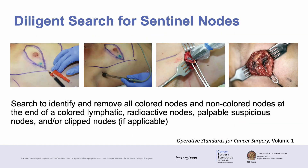Thus, when performing a sentinel lymph node biopsy, one must perform a diligent search for all sentinel lymph nodes. The approach depends on the type of tracer or dye used. Fulfilling this component of the standard involves searching for and removing all colored nodes and non-colored nodes at the end of a colored lymphatic channel when dye is used, removing radioactive nodes when radiotracer is used, removing all suspiciously palpable nodes, and removing clipped nodes when applicable.